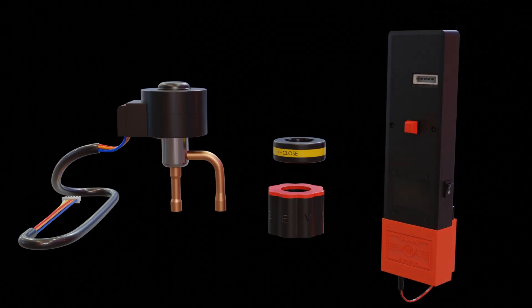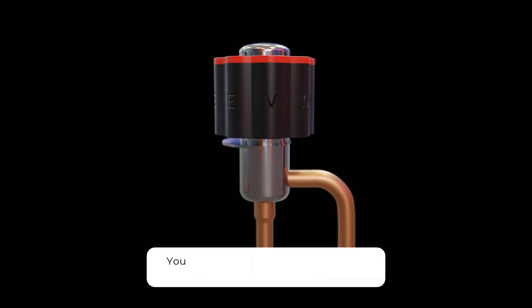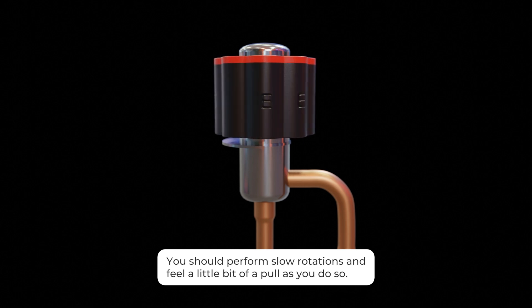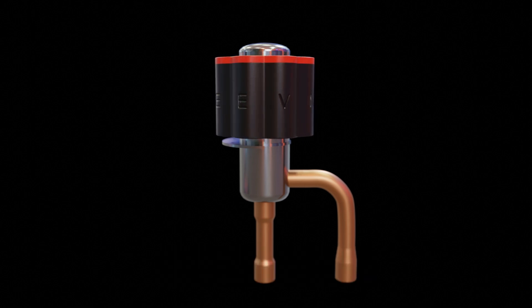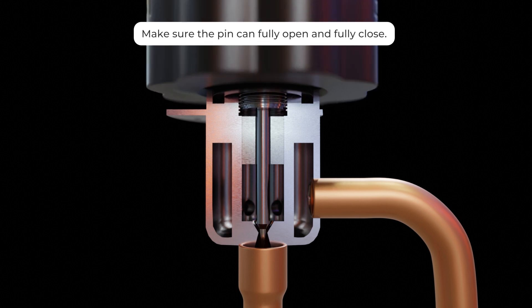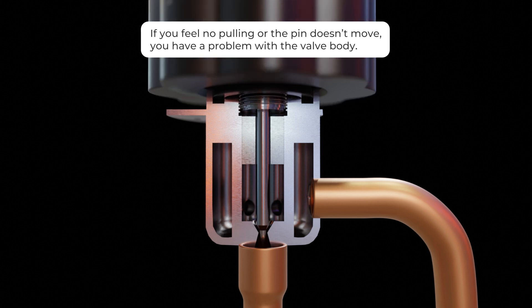If you use a manual actuator, you'll remove the power head and replace it with the actuator. You should perform slow rotations and feel a little bit of pull as you do so. Make sure the pin can fully open and close. If you feel no pulling or the pin doesn't move, you can be sure you have a problem with the valve body.